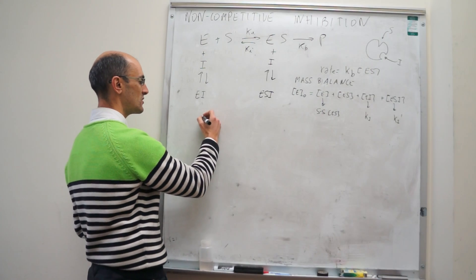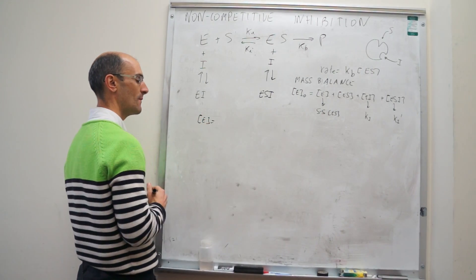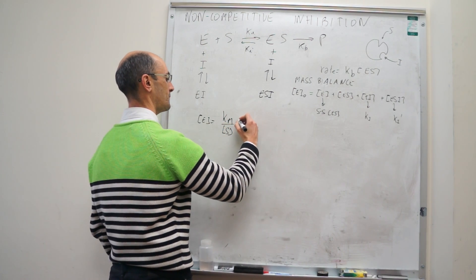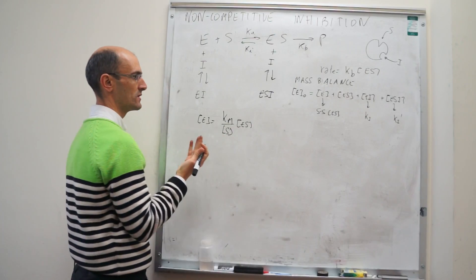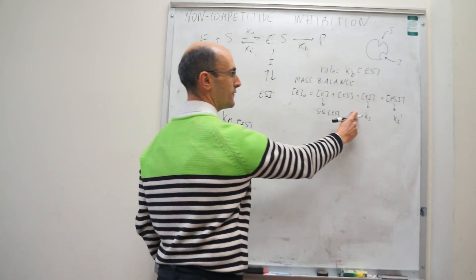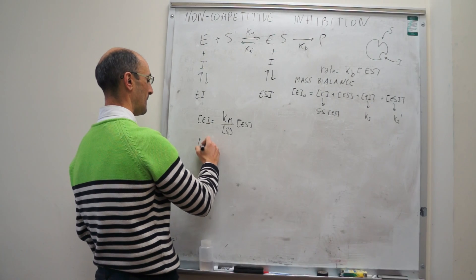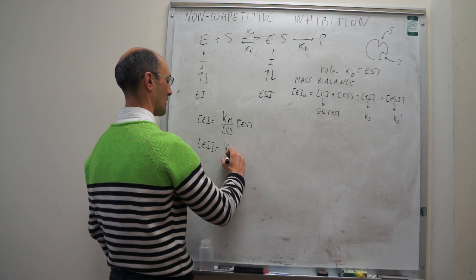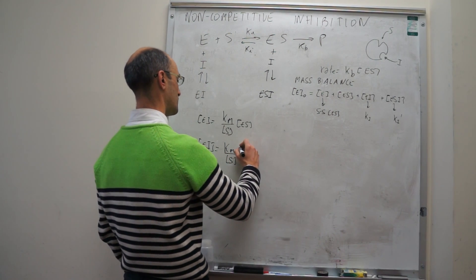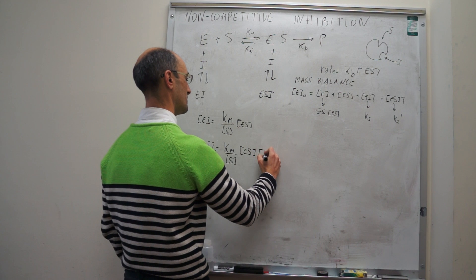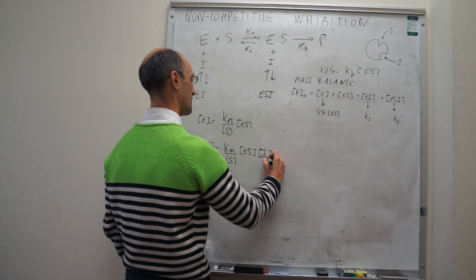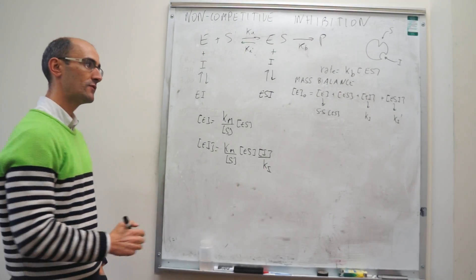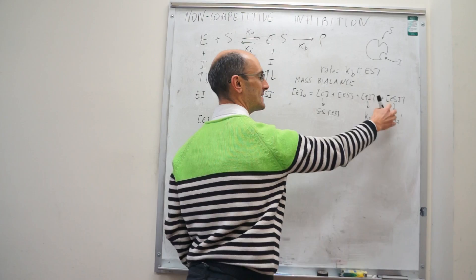Under those approximations, the concentration of free enzyme and the EI term are exactly the same as what we had for competitive inhibition — they don't change. So we have Km times ES over concentration of S, and concentration of ES, and concentration of I over Ki. What we have to reckon with now is the new ESI term.